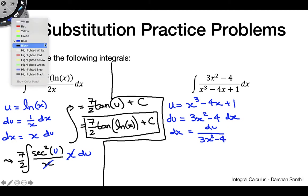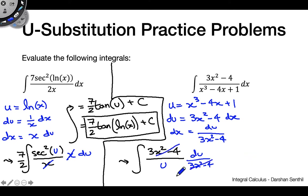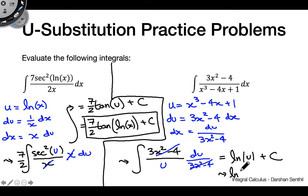So we're left with the integral of 1 over u du, which is just the natural log of the absolute value of u plus c. Plugging back in for x, our final answer is ln of |x cubed minus 4x plus 1| plus c.